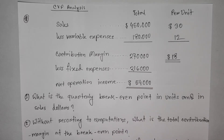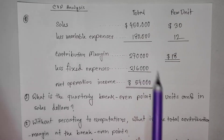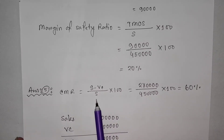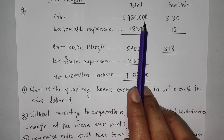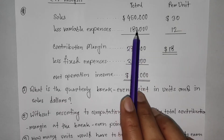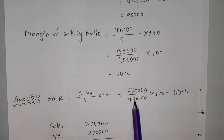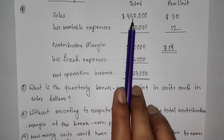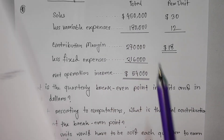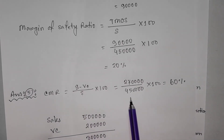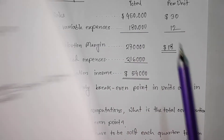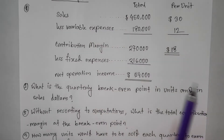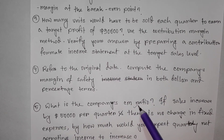We have the CM ratio. The CM ratio calculation: sales minus variable cost ratio gives us the contribution margin ratio. The total calculation results in 60%. So the contribution margin ratio is 60%, and that is the answer to this part of the question.